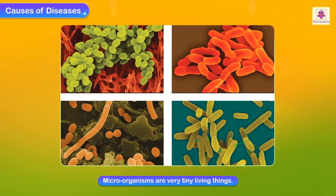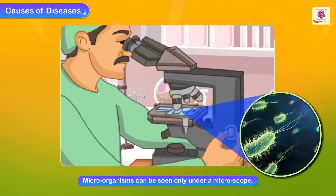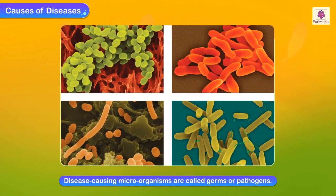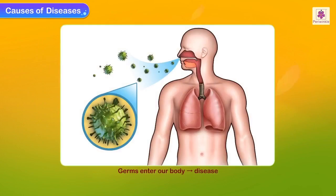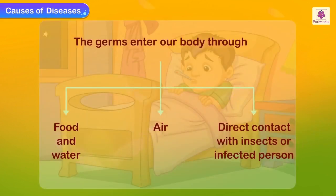Diseases are caused by microorganisms. Microorganisms are very tiny living things that can be seen only under a microscope. Disease-causing microorganisms are called germs or pathogens. When the germs causing a particular disease enter our body, we get that particular disease.